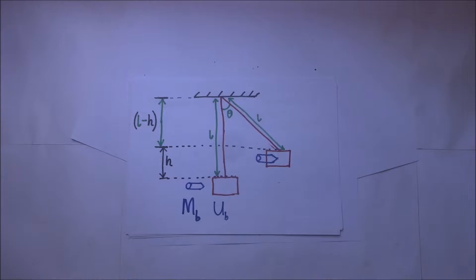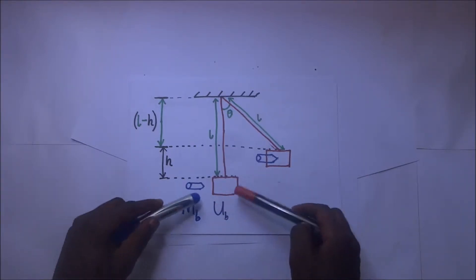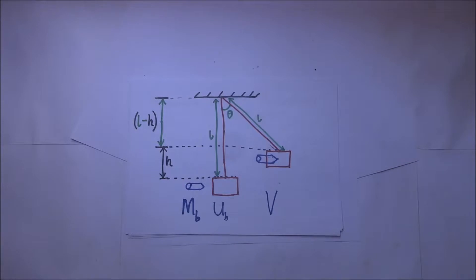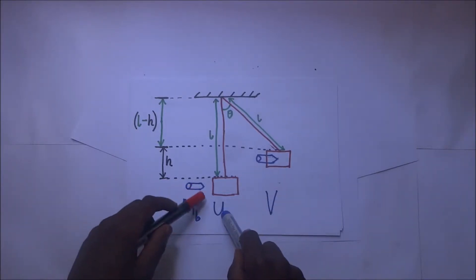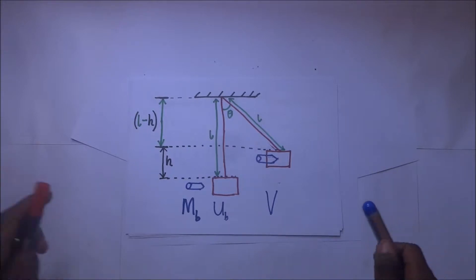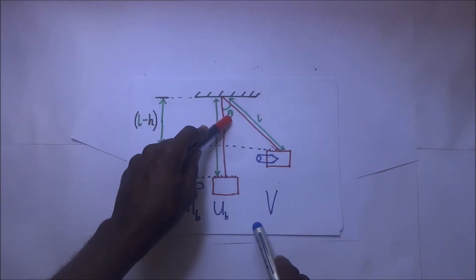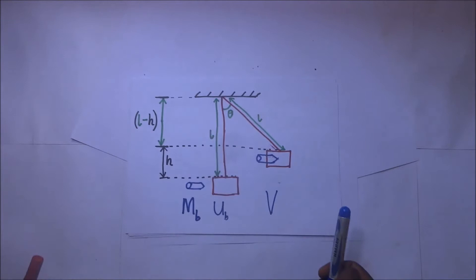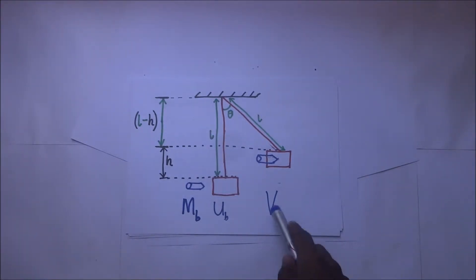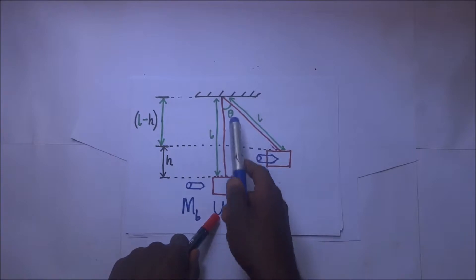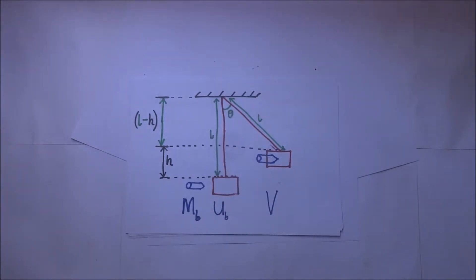With those parameters, we can find the final velocity V — the common velocity of the composite body after collision. We can derive an expression for the initial velocity of the bullet U subscript B, and also find the angle theta through which the string tilts when the bullet causes the block to rise. These are the expressions we will be deriving in this video.